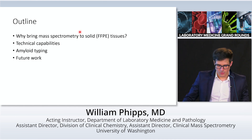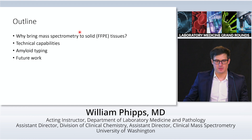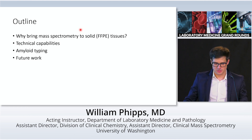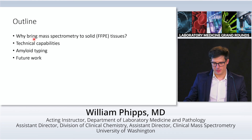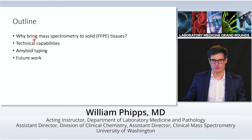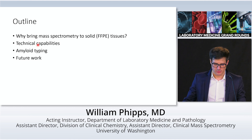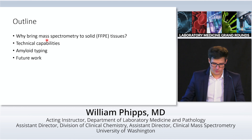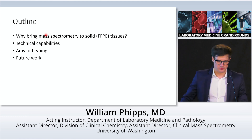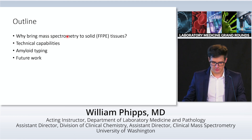I'm going to talk about why bring liquid chromatography mass spectrometry to solid tissues, in particular FFPE and frozen tissues, what are some specific examples of technical capabilities — particularly those that go beyond what we normally utilize for LC-MS in clinical testing — talk about amyloid typing, our particular approach, how that works, and briefly mention some future projects we have in the pipeline.